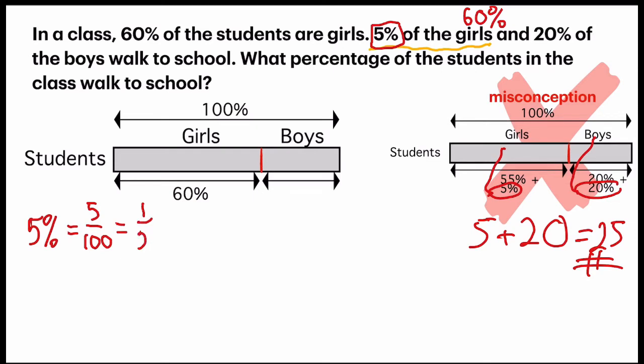It becomes 1 out of 20. So now I read it with the fraction 1/20 of the 60%. So now let us find 1/20 of the 60%. And I simplify this, I will get 3. So from that 60%, 3% of the girls walk to school.